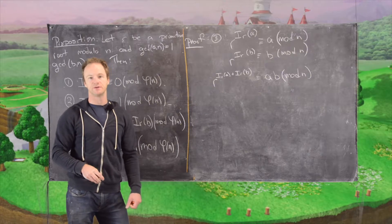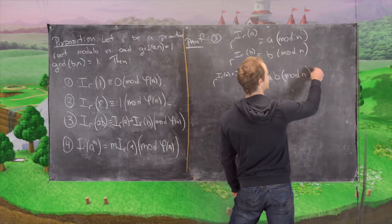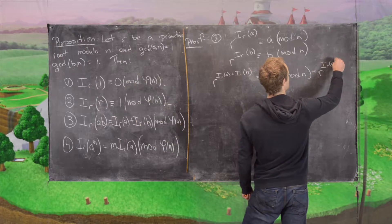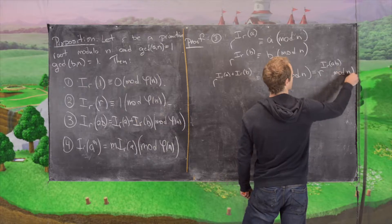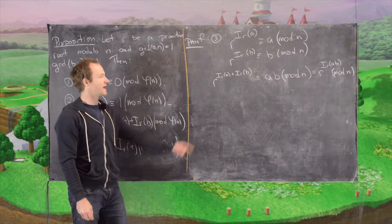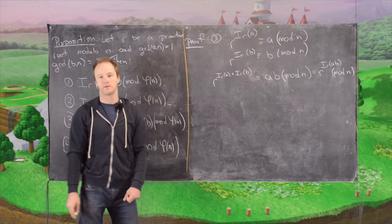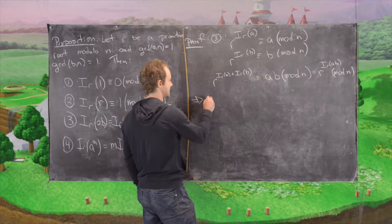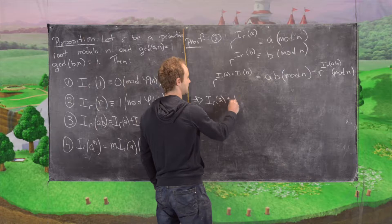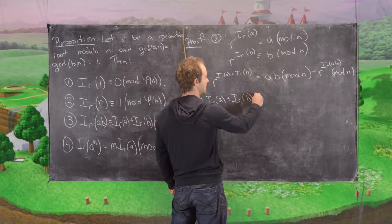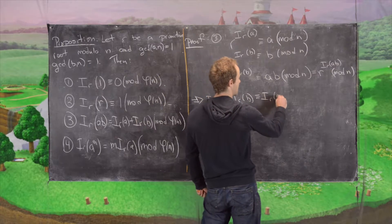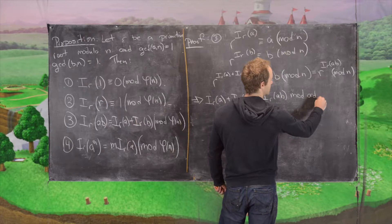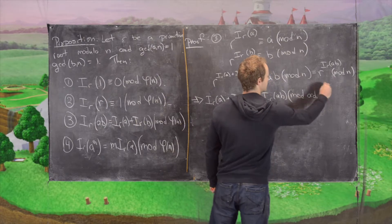And now we're going to use the same trick that we used above to rewrite ab. Notice that is the same thing as r to the i_r(ab) mod n. So we've got r to some power equals r to some other power. And now by a previous result, that tells us that i_r(a) plus i_r(b) is congruent to i_r(ab) modulo the order mod n of r.